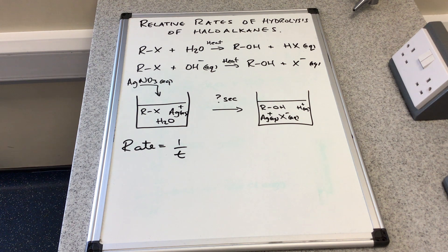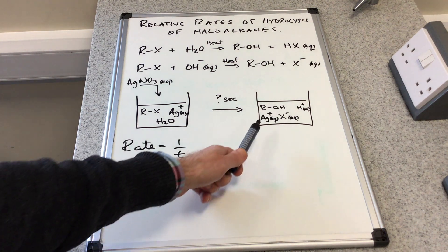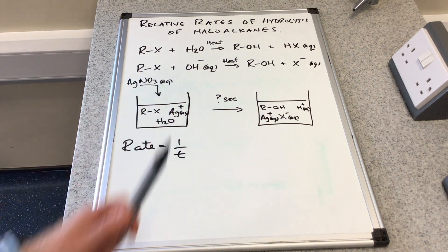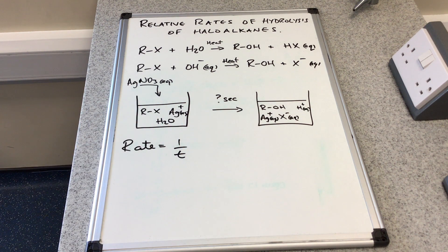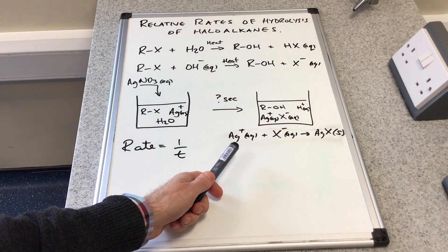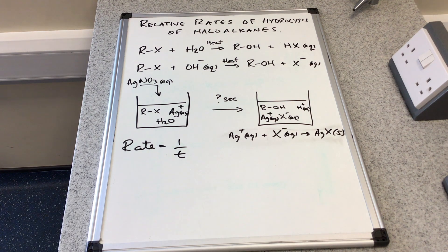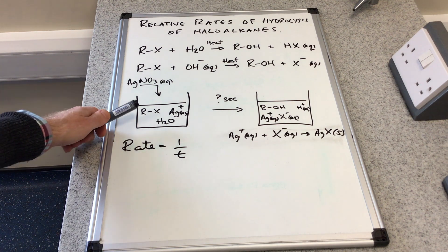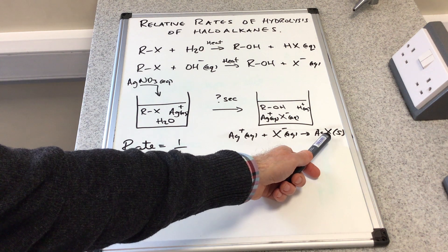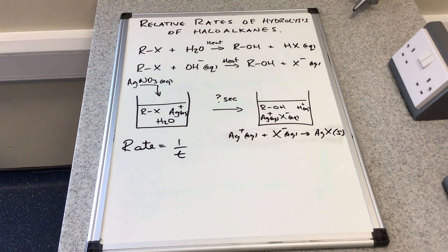Because we've got silver ions in there, when the halide ion forms it can react with the aqueous silver ions and generate a silver halide precipitate. If that was a chloroalkane we'd get silver chloride, a white precipitate; if it was a bromoalkane we'd get a cream precipitate of silver bromide; and if it was an iodoalkane we'd get a yellow precipitate of silver iodide.